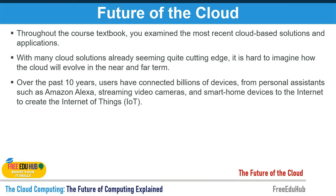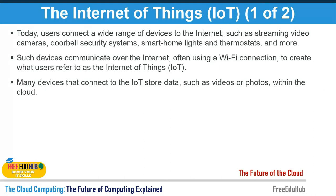Over the past 10 years, users have connected billions of devices — from personal assistants like Amazon Alexa, streaming video cameras, and smartphones — to create the internet of things. Today, users connect a wide range of devices to the internet, such as surveillance cameras, doorbells, security systems, smart lights, and thermostats. All of these are managed using IoT technology, communicating over Wi-Fi.